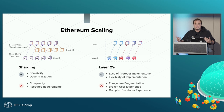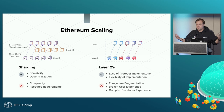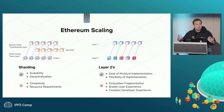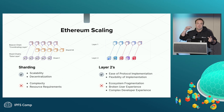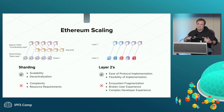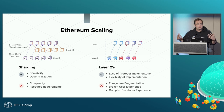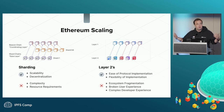The downside is ecosystem fragmentation. Layer twos have absolutely exploded — there are many different solutions, and additional complexities around sequencers and data availability layers. There's a broken user experience: it might be as simple as clicking and adding a network, but there are many different networks. It's also a complex developer experience — a developer must select which layer two, which developer platform, which sequencer, and which functions to compose with. Many end up going multi-chain, adding user complexity and confusion.